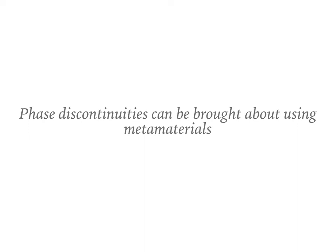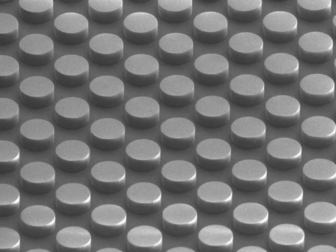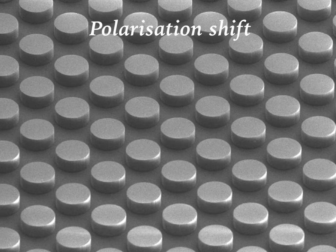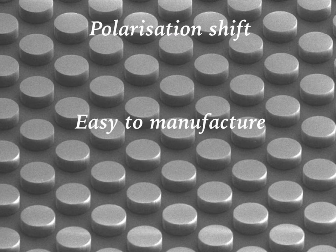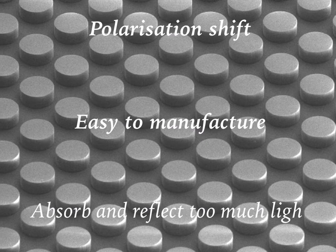Further research has shown that such phase discontinuities can also be brought about using metamaterials made of silicon. These function by imparting a spatially dependent polarisation shift as light passes through the elements. These elements are simpler to manufacture and focus transmitted visible light much more efficiently, but they still absorb or reflect too much light to make a viable commercial lens.